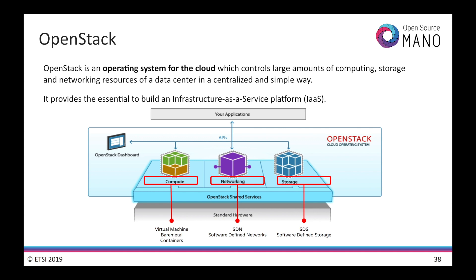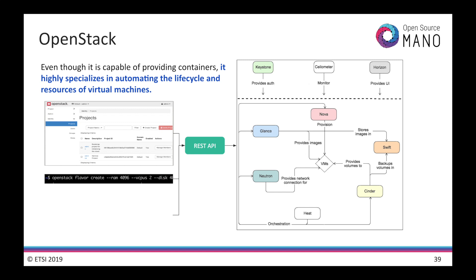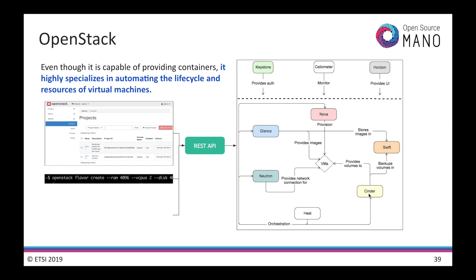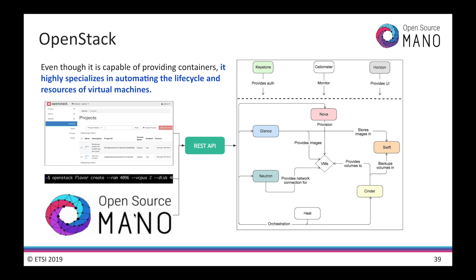OpenStack is a successful open-source project that lets users build their own private or public clouds by automating the provision of compute, networking, and storage resources that virtual instances need, providing self-service, elasticity, telemetry, security, and all the features that any cloud should provide. It has been widely adopted by network operators looking for a unified private cloud environment for their network functions. Though capable of providing containers, it highly specializes in automating the lifecycle and resources of virtual machines. Through different software modules, it provides all the resources a VM requires, including compute, images, networks, storage, telemetry, security, simple management, and template-based orchestration, exposed through a rich REST API. In the NFV world, OSM abstracts the operator from VM management towards network service end-to-end orchestration.